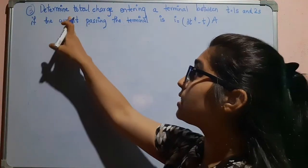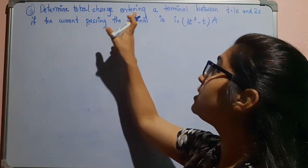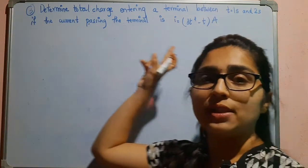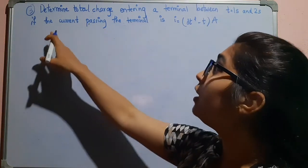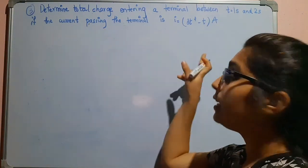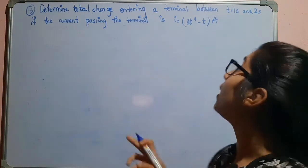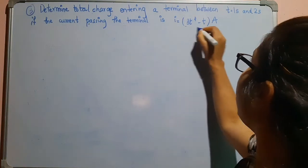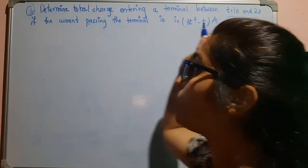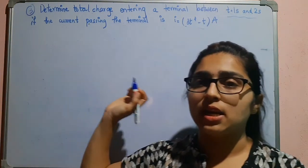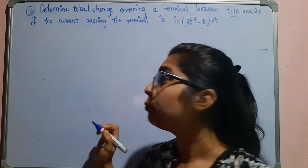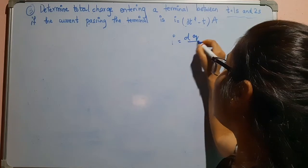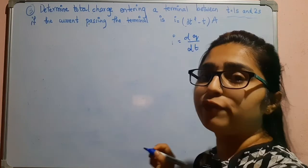In this question they are asking you to find the total charge entering a terminal between t = 1 second and t = 2 seconds, if the current passing through the terminal is i = 3t² − t ampere. Here they have given the current and the time interval, and they are asking you to find the total charge q.